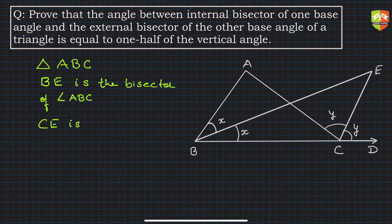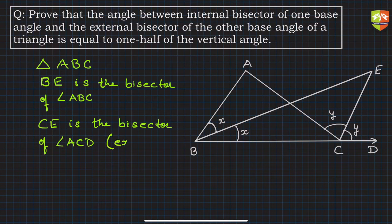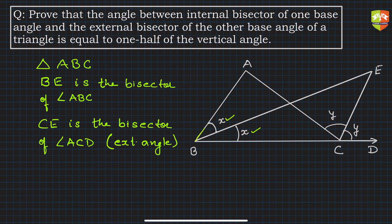ACD is the external base angle and CE is the bisector of the external angle ACD. ABC is the internal angle. Since BE bisects angle ABC, I have shown this as x and x. Similarly, CE bisects ACD, so I have shown those as y and y.